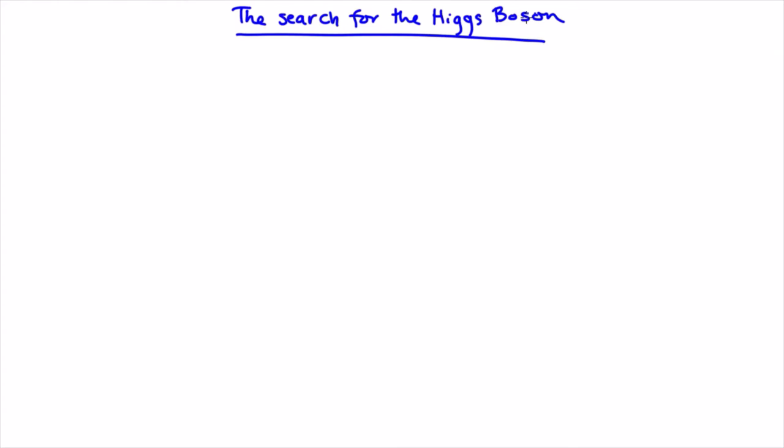So to make a very long story short, this meant there needed to be some new clever way to generate W and Z exchange bosons with mass. This is where Higgs, Braut, and Engelbert's theory comes in.